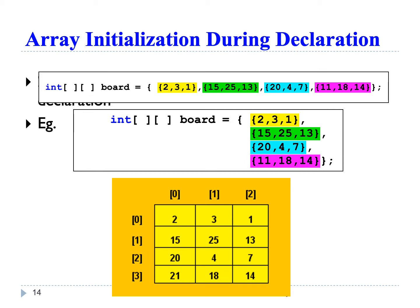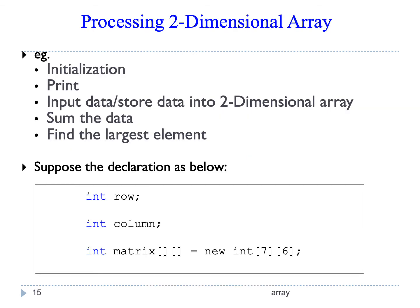You can write all of this on a single line, but we normally put it on different lines to make it easier to read. Whatever we can do with a one-dimensional array, we can do with a two-dimensional array — such as initialize values, print, take input from users, and do any kind of calculation.